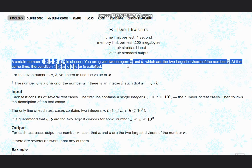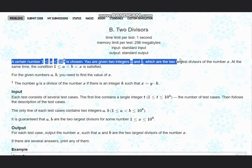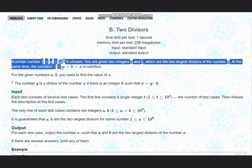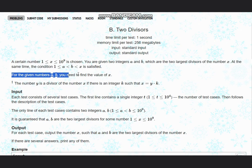You are given two integers a and b which are two largest divisors of the number x. At the same time, the condition 1 ≤ a < b < x is satisfied. For the given numbers a and b, you need to find the value of x.